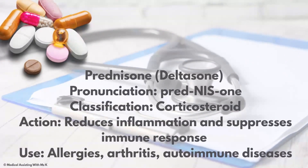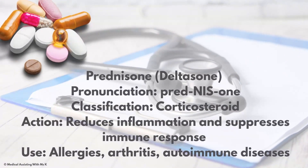Deltasone — the generic is prednisone. Notice the pronunciation. Classification: corticosteroid. Action: it reduces inflammation and suppresses immune response. Use: allergies, arthritis, and autoimmune diseases.